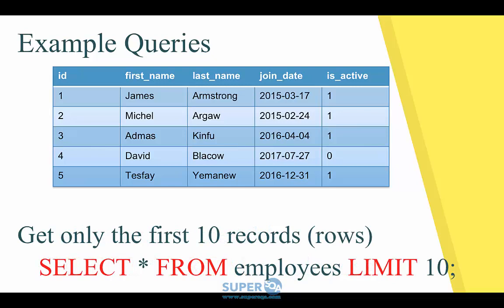Now, what if we just want to get only 10 employees — 10 rows? You do SELECT * FROM employees, except we're going to add LIMIT 10. This will only return 10 rows. Usually you're going to use LIMIT because the table can have millions of rows. Either you use a limit or you use some kind of condition.